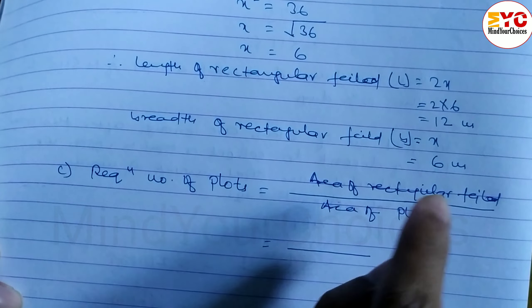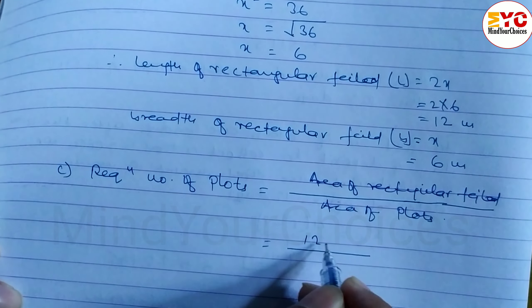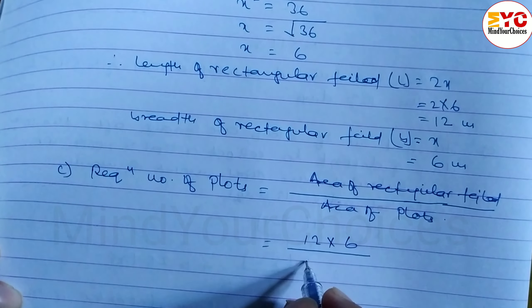Area of rectangular field is length into breadth, 12 into 6. Number of plots: length and breadth of plots is 6 into 3.